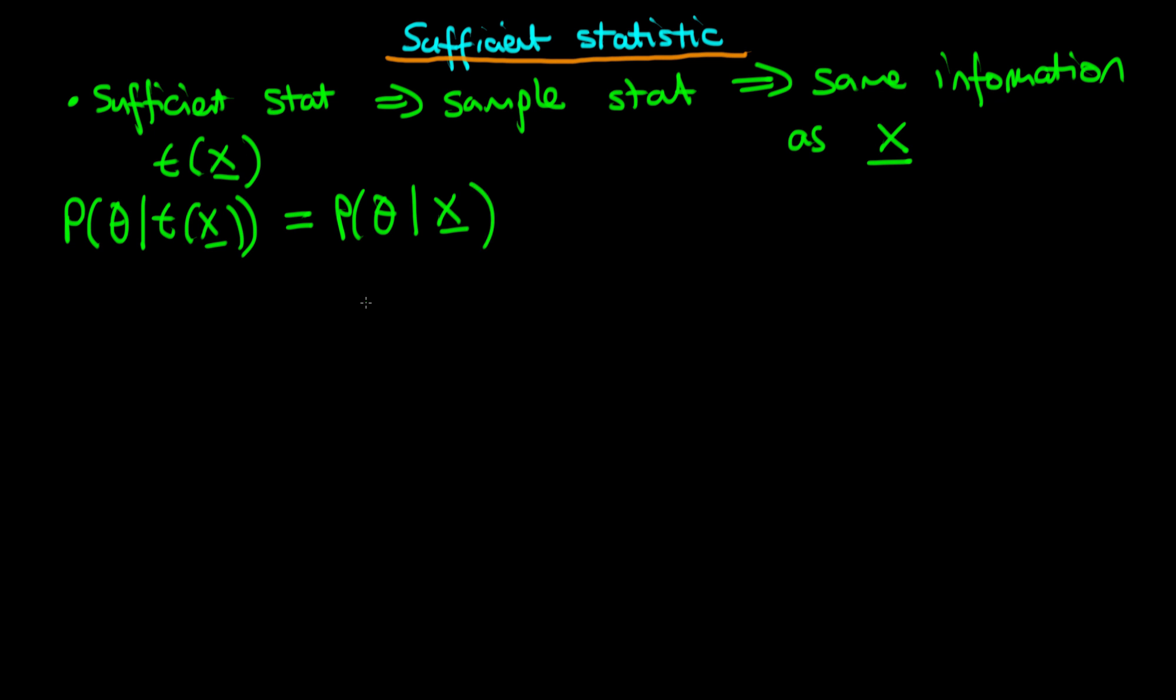So why is this useful? Well, the idea is that if we have a particularly large data sample, then essentially a lot of that information is redundant. And so long as we knew the sufficient statistic for that sample, then we could sort of forget about all of this big data sample and just focus on the summary statistic.